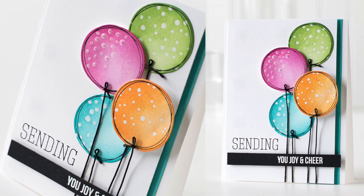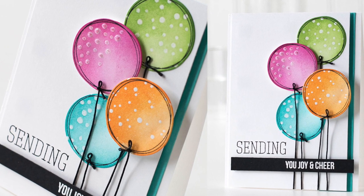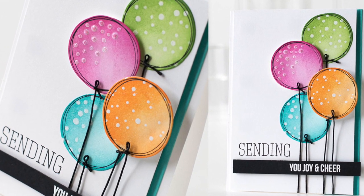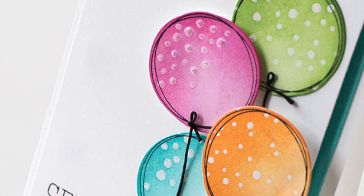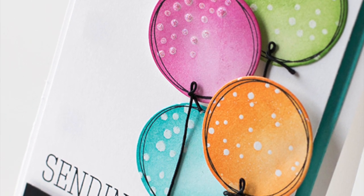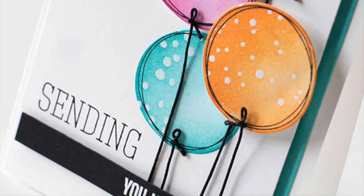I've put together a card using some of the circles that I've used with my resist and added some strings and knots to look like balloons. And to finish things off I've added a sentiment partially stamped on the card and then heat embossed with white embossing powder on a black strip of paper.